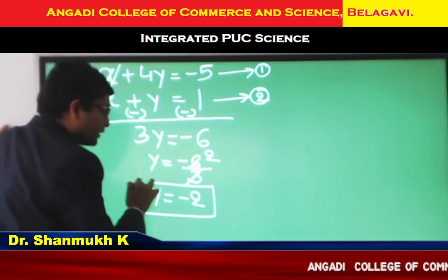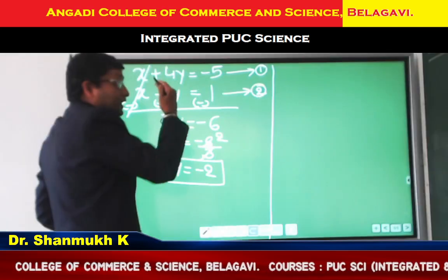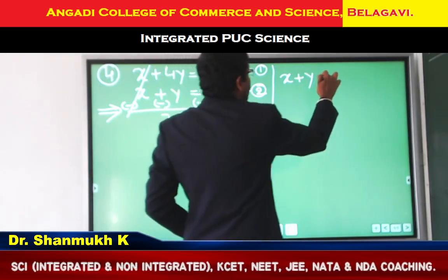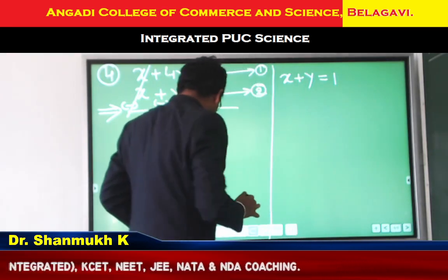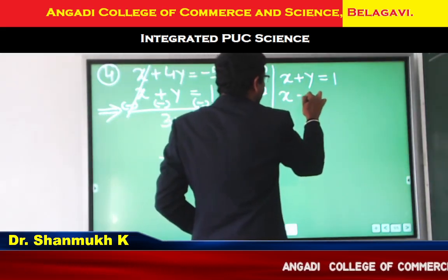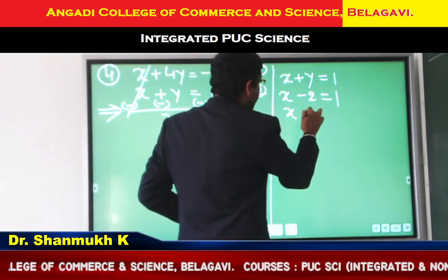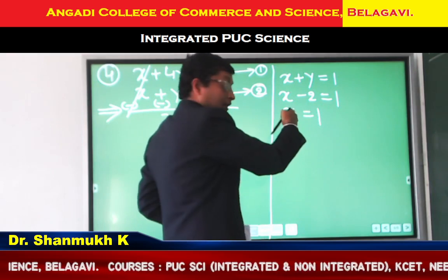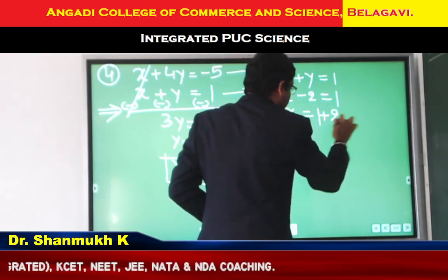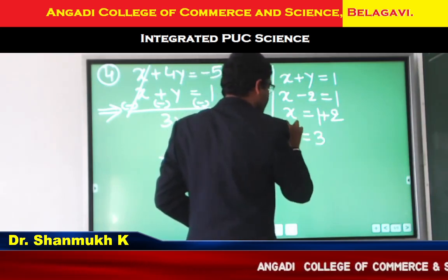Next, take any one equation. The second equation is simple: X plus Y equal to 1. Y value is minus 2. So X plus minus 2 equal to 1. Transposing, X equal to 1 plus 2. We get X equal to 3.